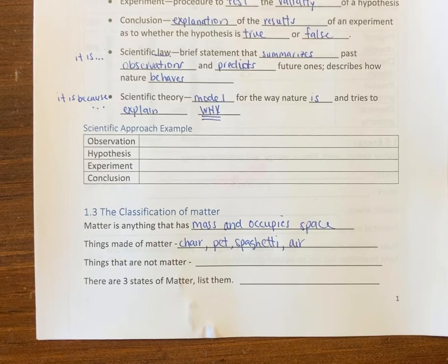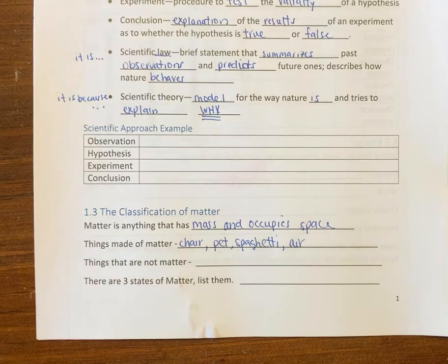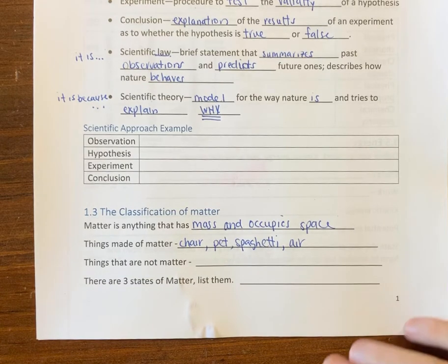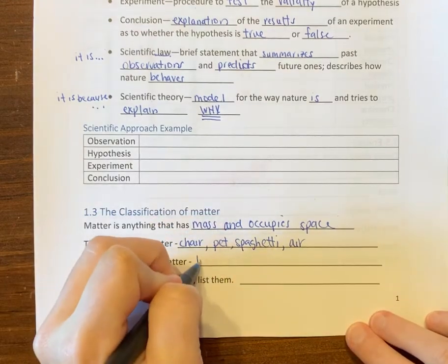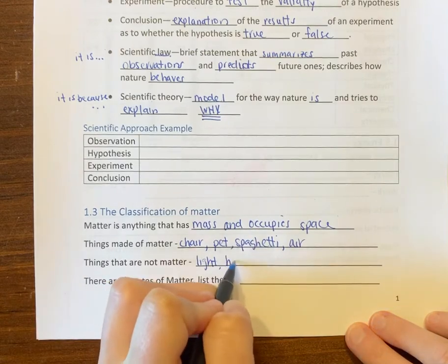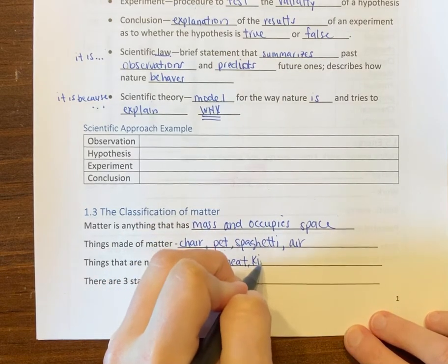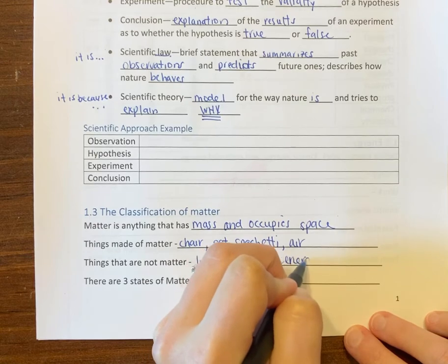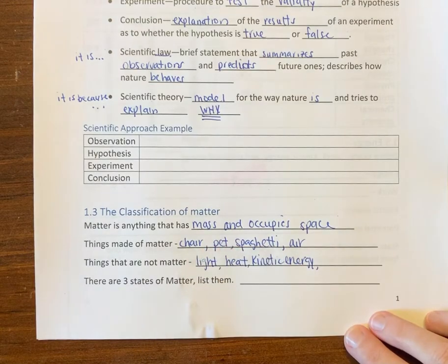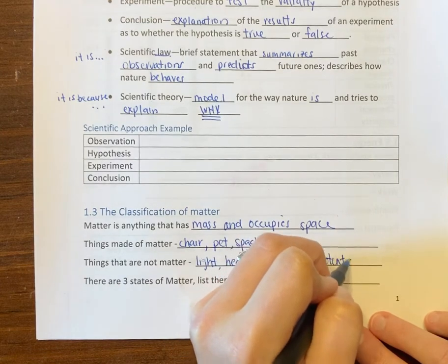Now, let's contrast that with things that are not matter. This is not quite as intuitive as you might think. Light is not matter. Heat is not matter. How about kinetic energy? That's energy of motion, that's not matter. Neither is potential energy, so energy in any sort.